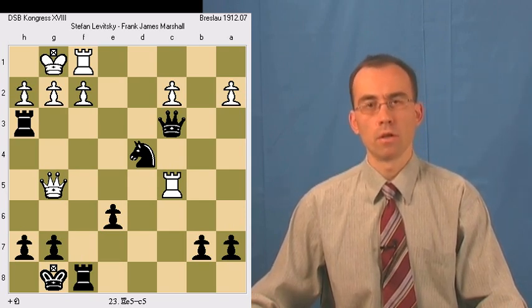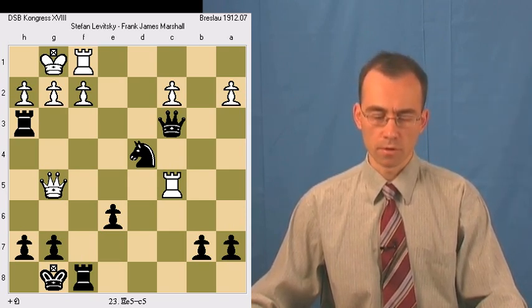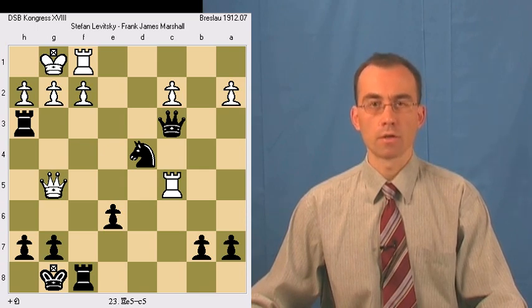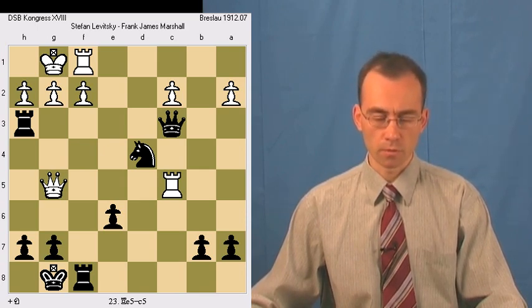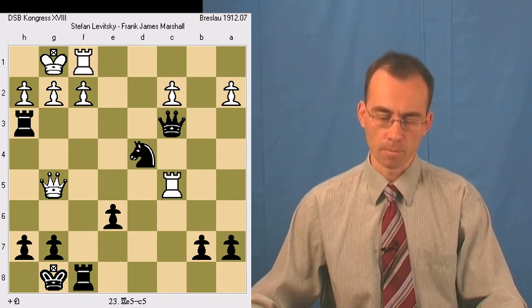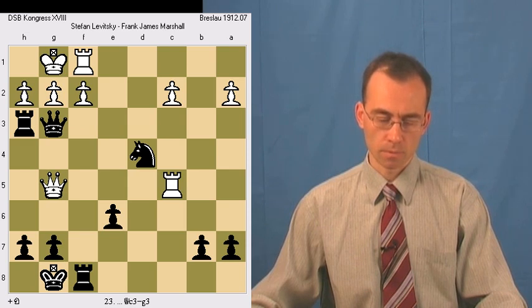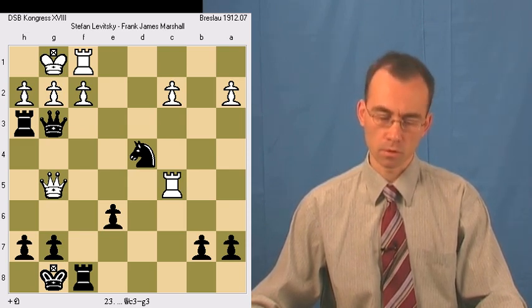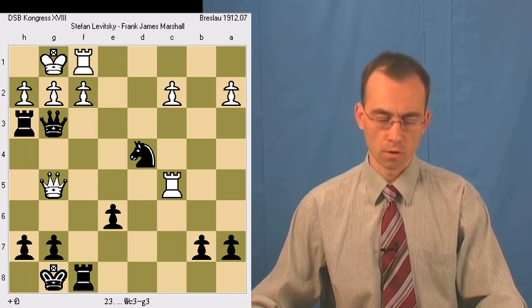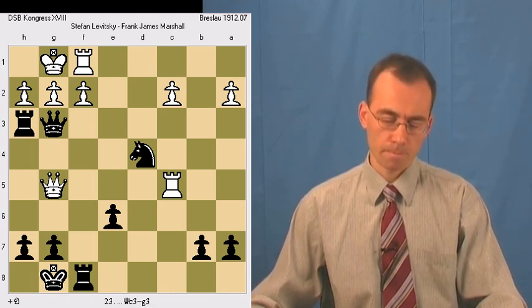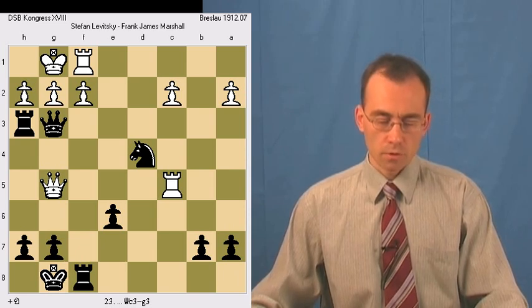But in any case, in this position black has a just wonderful and stunning move, queen g3. This is considered one of the most beautiful moves in the history of chess. So let's consider what's going on here.